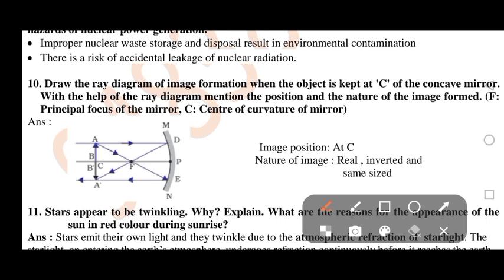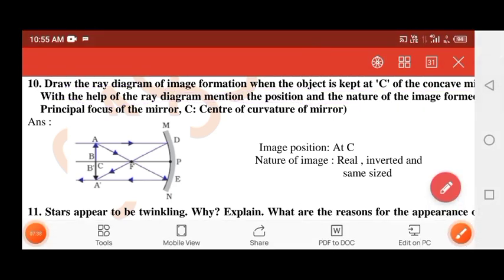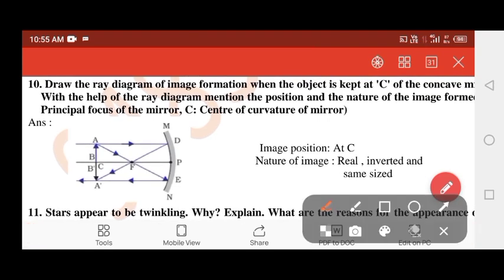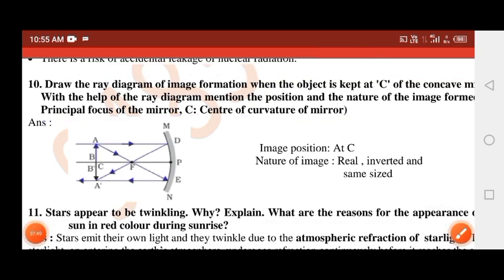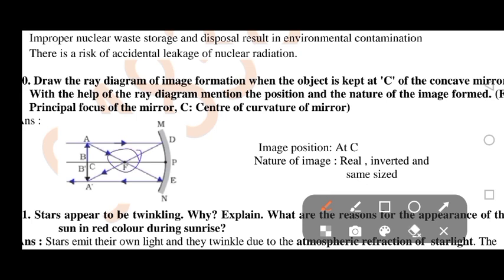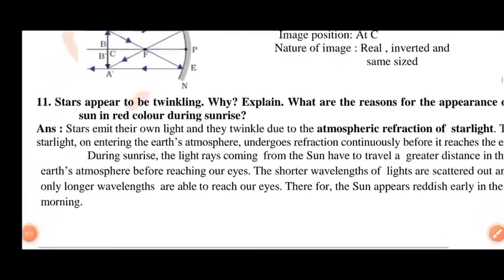Draw the ray diagram of image formation when the object is kept at C of the concave mirror. With the help of the ray diagram, mention the position and nature of the image formed. F is the principal focus of the mirror and C is the center of curvature of the mirror. Image position: at C. Nature of image: real, inverted, and same size.